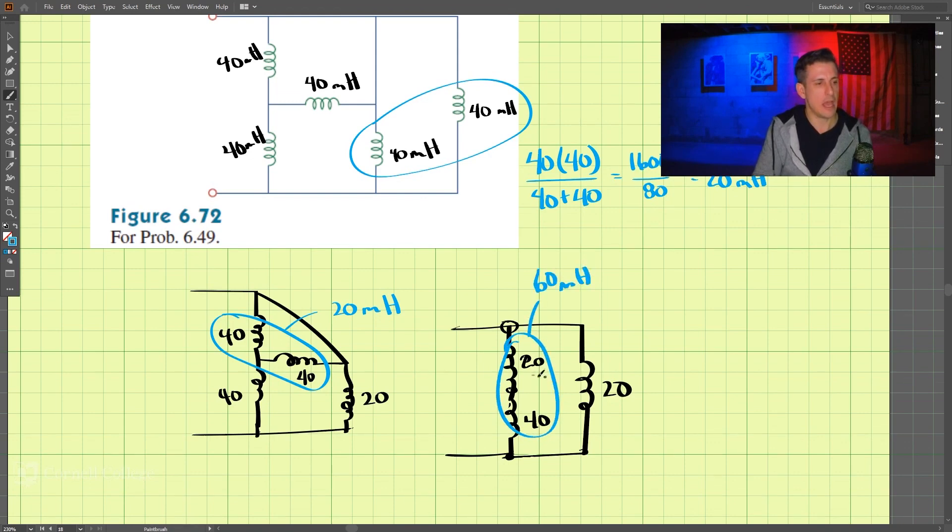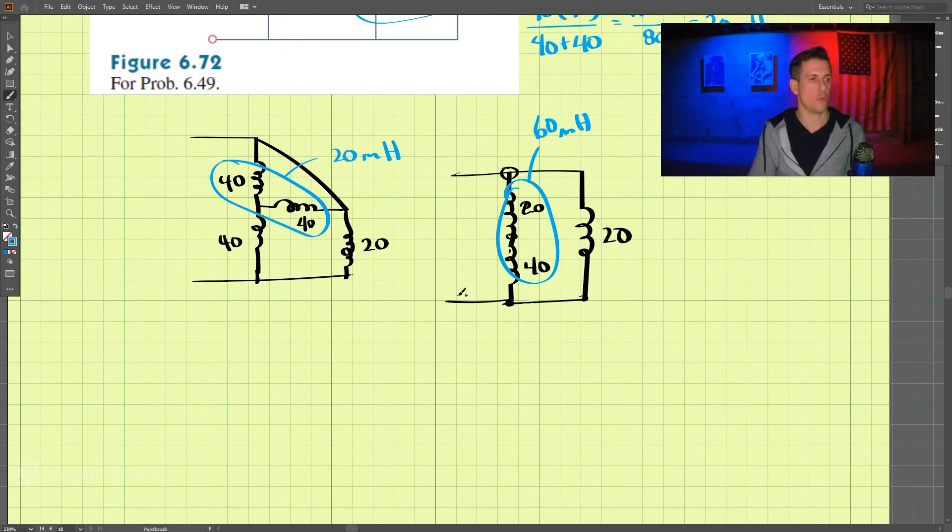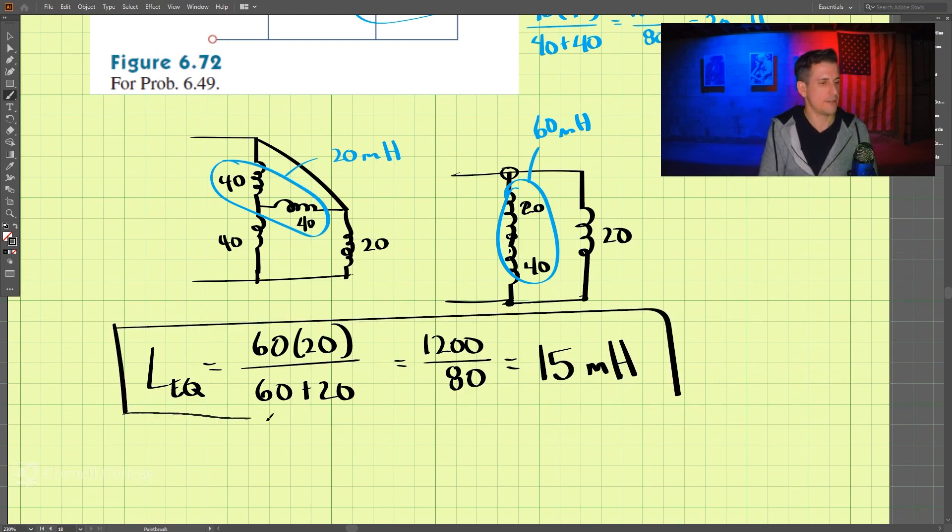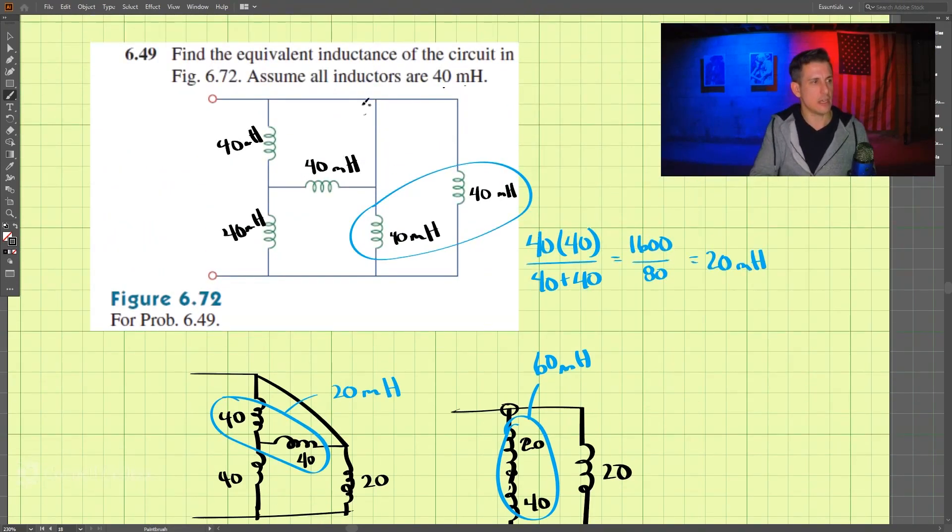Okay, so this looks right. So these combined here, that's going to be 60, so that's 60 millihenry, and then this 60 is in parallel with the 20. So if we do that we have 60 times 20 divided by 60 plus 20, and that is 1200 divided by 80. 1200 divided by 80, and does that come out to be 15? Yeah, that comes out to be 15 millihenry.